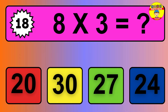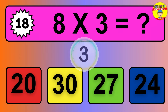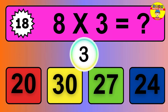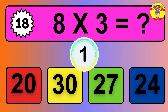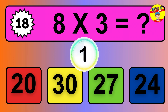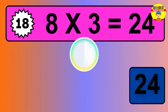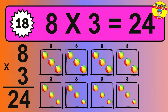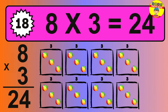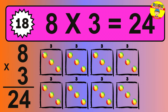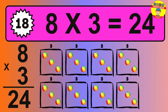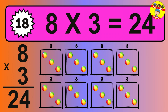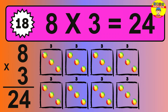Question 18. 8 times 3 equals what? The answer is 8 times 3 is 24. So how many balls do we have? 24 balls.